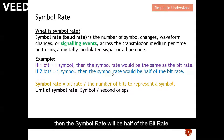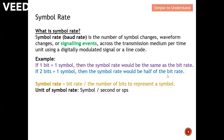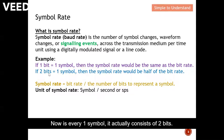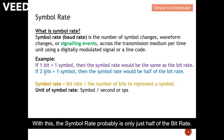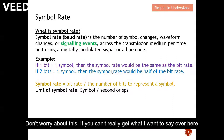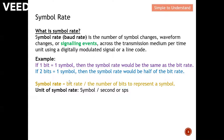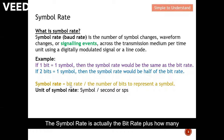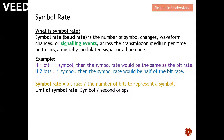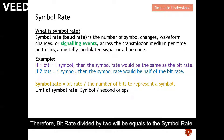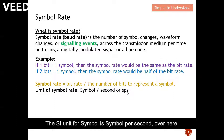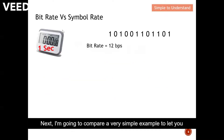So the symbol rate equals the bit rate divided by how many bits represent one symbol. In this case, two bits per symbol, so bit rate divided by two equals the symbol rate. The unit for symbol rate is symbols per second. Don't worry if this isn't fully clear yet — I will illustrate it with an example on the next slides.